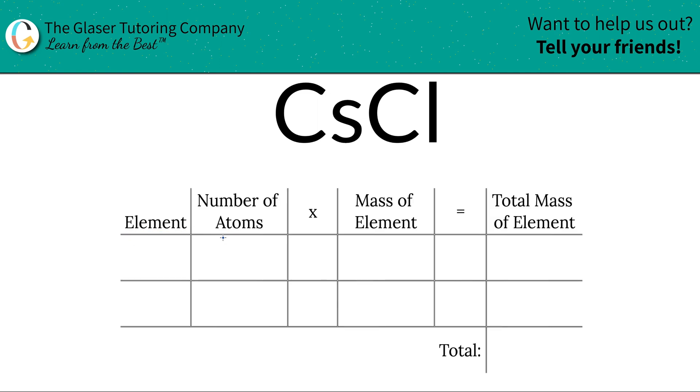The first step is to write down the elements that you see in the compound. We see cesium, Cs, and we see chlorine, Cl.